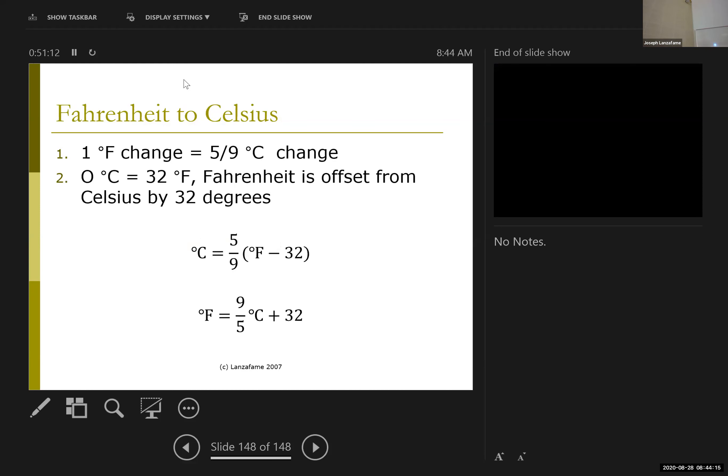If you go from Fahrenheit to Celsius or, frankly, Fahrenheit to Kelvins, you have to do both things because one degree Fahrenheit is not the same as one degree Celsius. If you go up one degree Fahrenheit, you only go up five ninths of a degree Celsius, 0.555. And the zeros are different. Zero degrees Celsius is 32 degrees Fahrenheit.